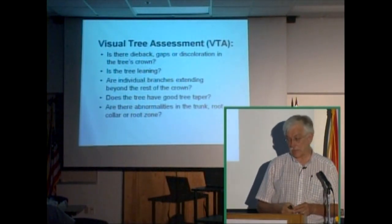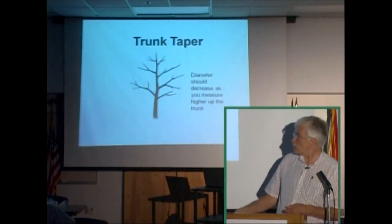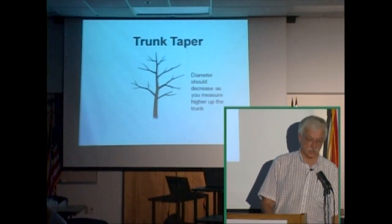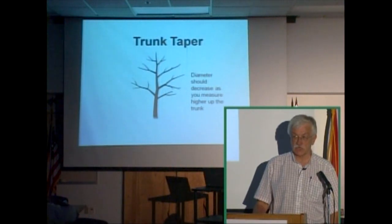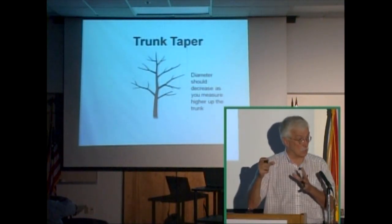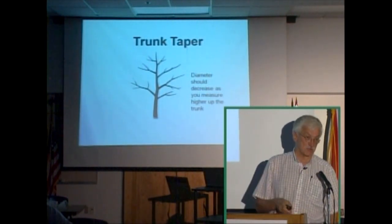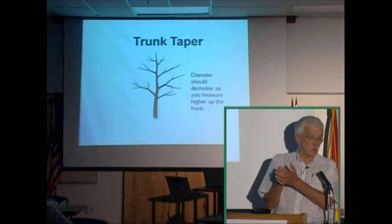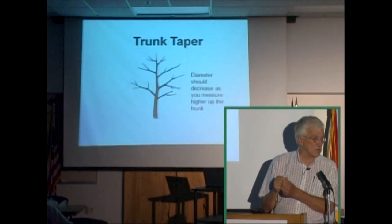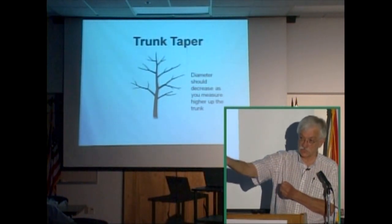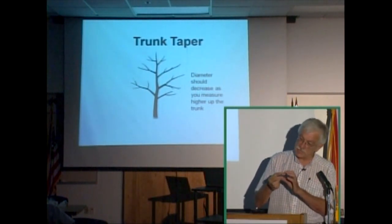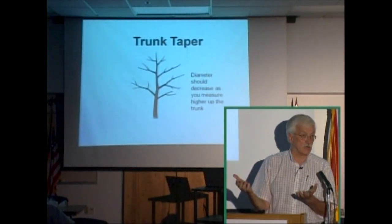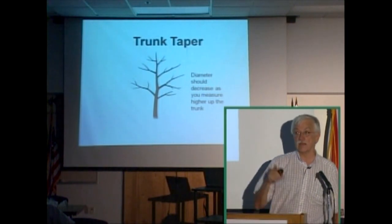Look for abnormalities in the trunk, root collar, or root zone — especially girdling roots. As you go up in the canopy, the trunk diameter should be smaller. Trees saved by developers that were in a grove may lack good trunk taper because they were protected from wind by neighboring trees. Think of a fishing pole: the best fishing pole bends under stress because it has a smaller diameter at the tip than at the base. A pole with uniform diameter is more likely to break. Taper is a good thing — if you don't see taper, that's a potential danger sign.